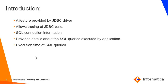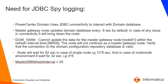The need for JDBC spy logging in PowerCenter domain: PowerCenter domain uses JDBC connectivity to interact with the domain database. As per design, the master gateway node will update the domain database every 8 seconds by default. In case of any connectivity issues, the node will go down — it could be a network issue, a database issue, or the node itself being 100% utilized.